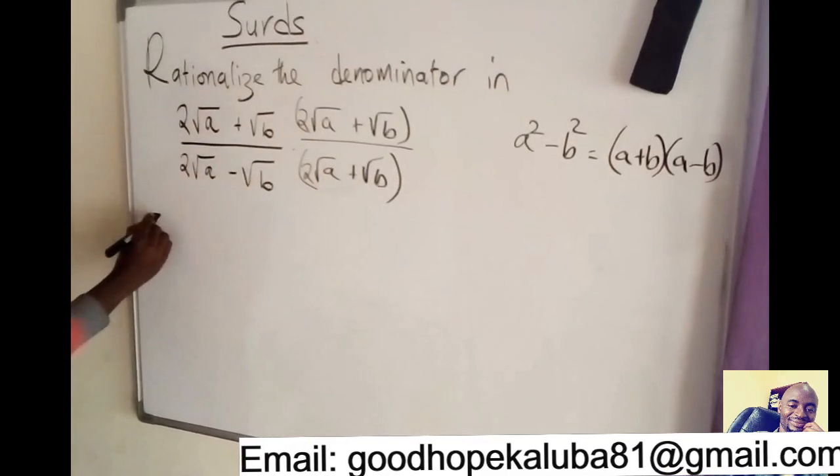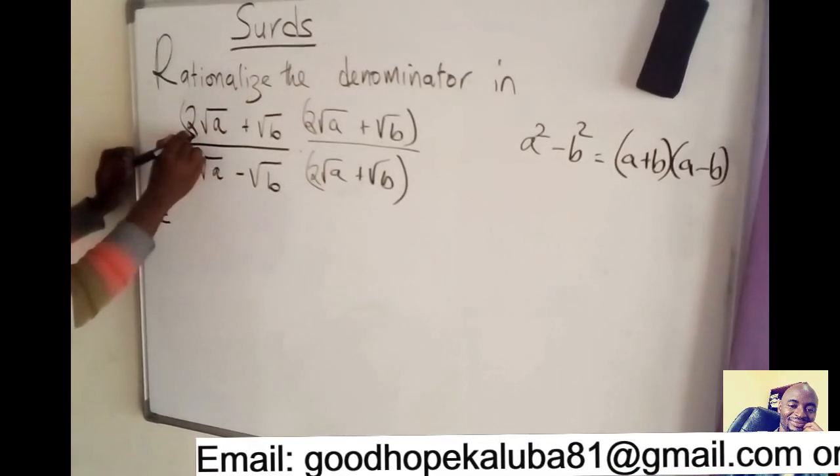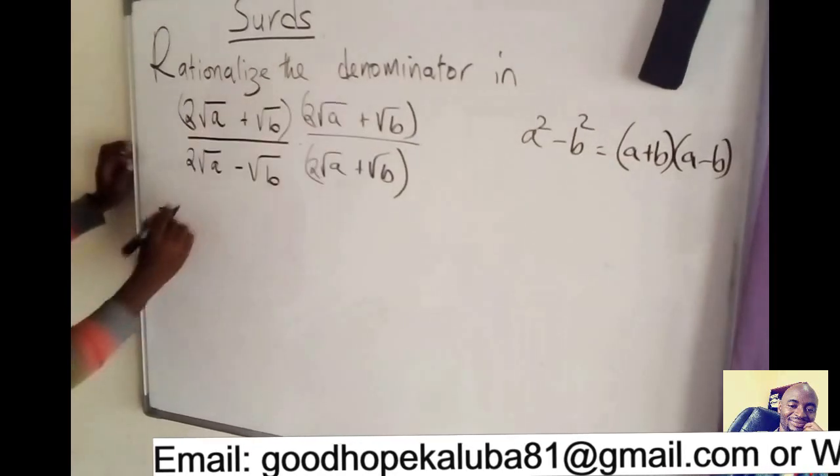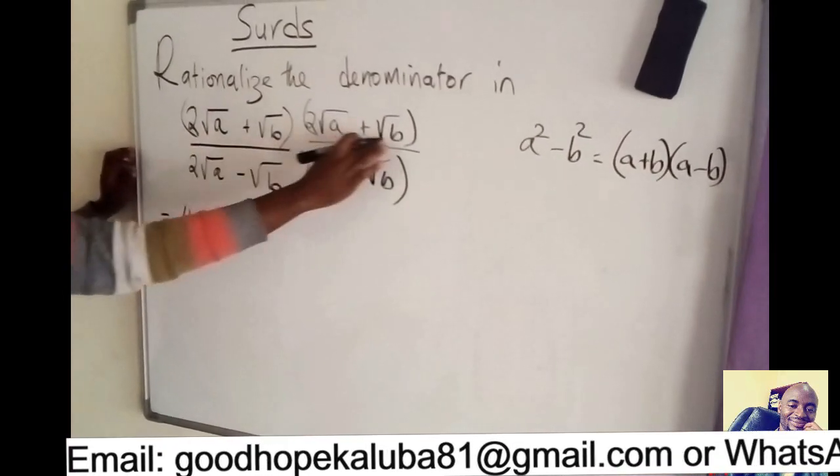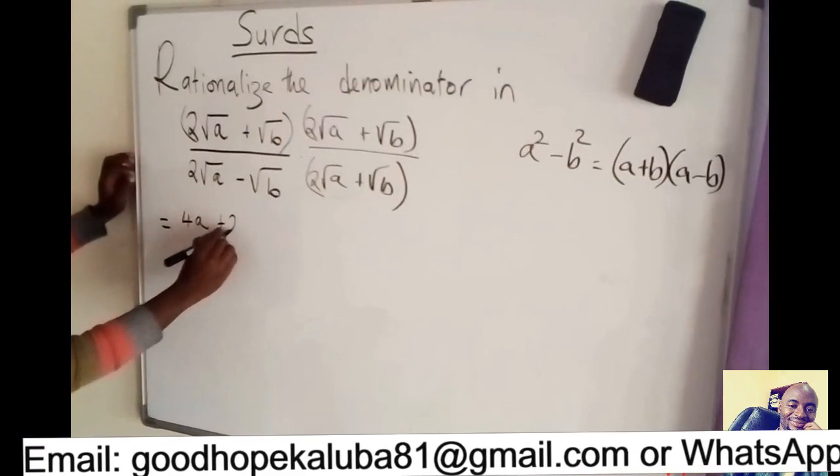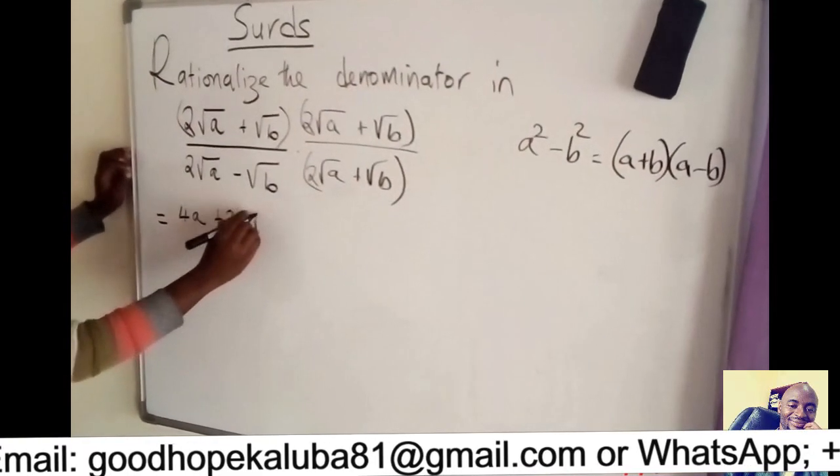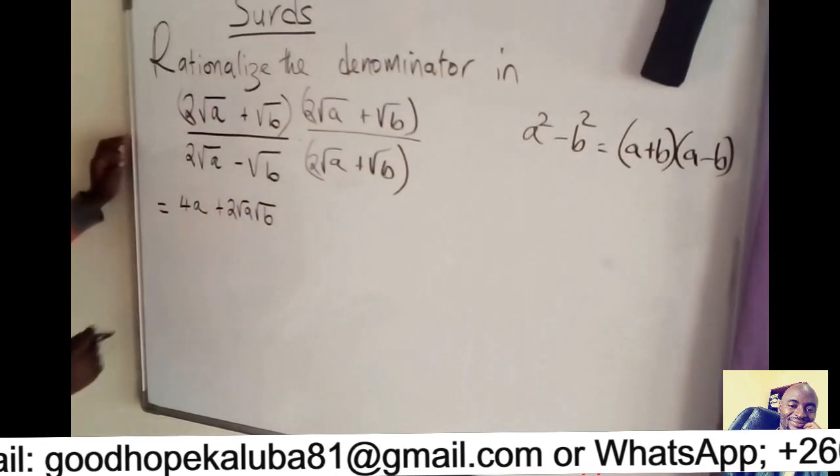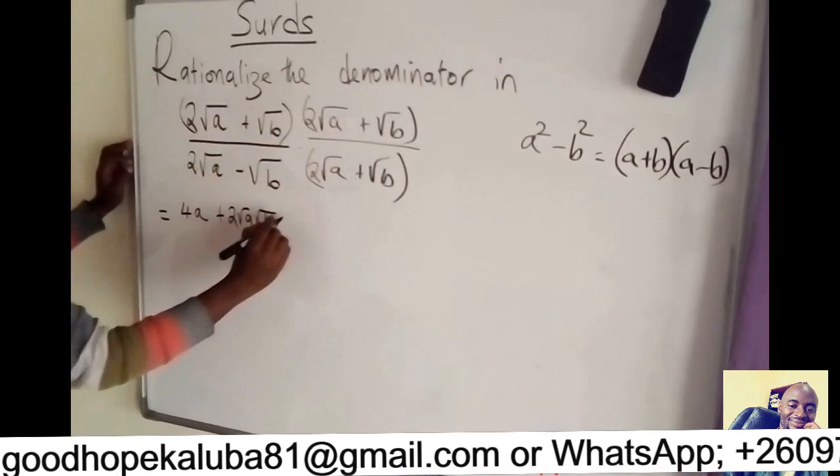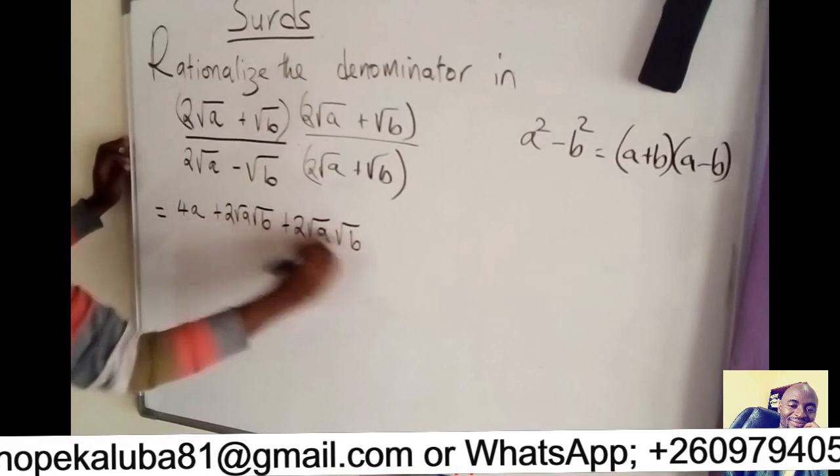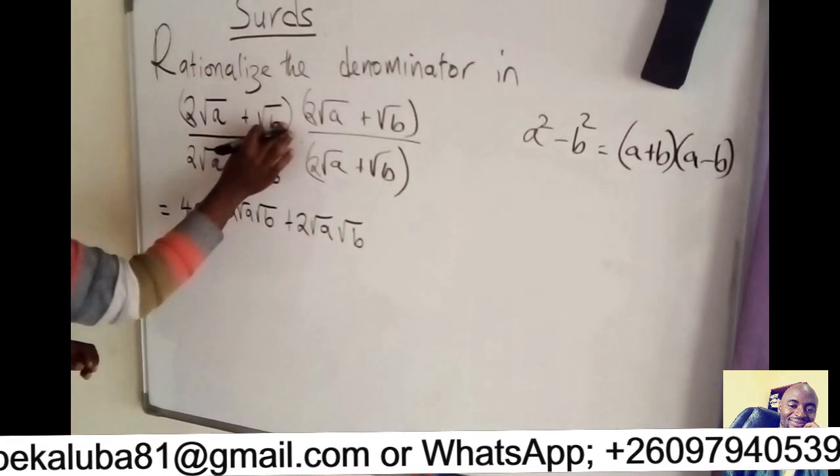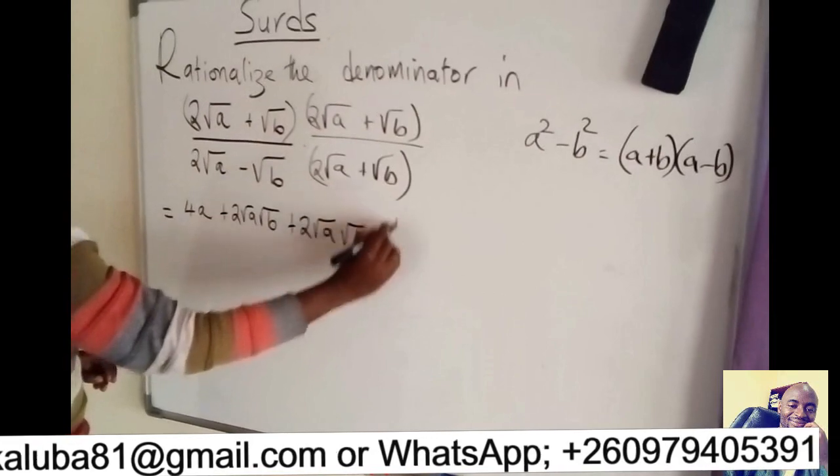So I'm going to multiply here, multiply and there, multiply. So this will be equal to, if I try to multiply this and that, we get 4A, then this multiplied by that gives plus 2 square root A, square root B. Then I'll multiply this and that, plus 2 square root A, square root B. Then I'll multiply this, multiply by that, we get B.